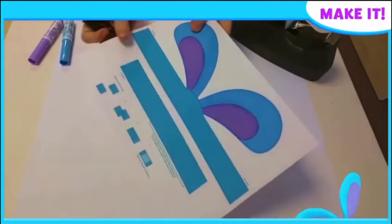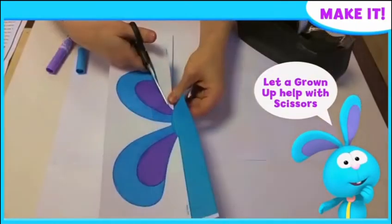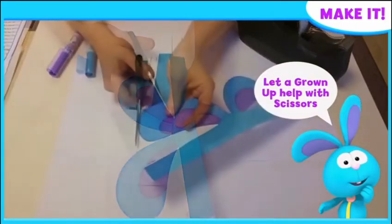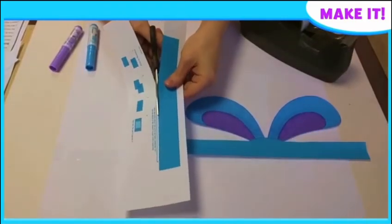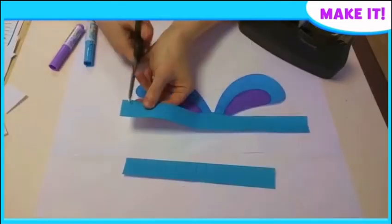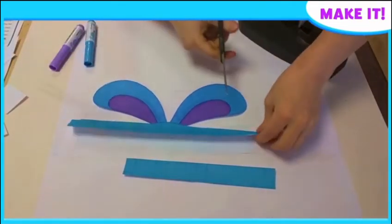Use the safety scissors to cut out the Raggles Ears strip. Then cut out the second paper strip. Cut along the dotted lines on the two paper strips.